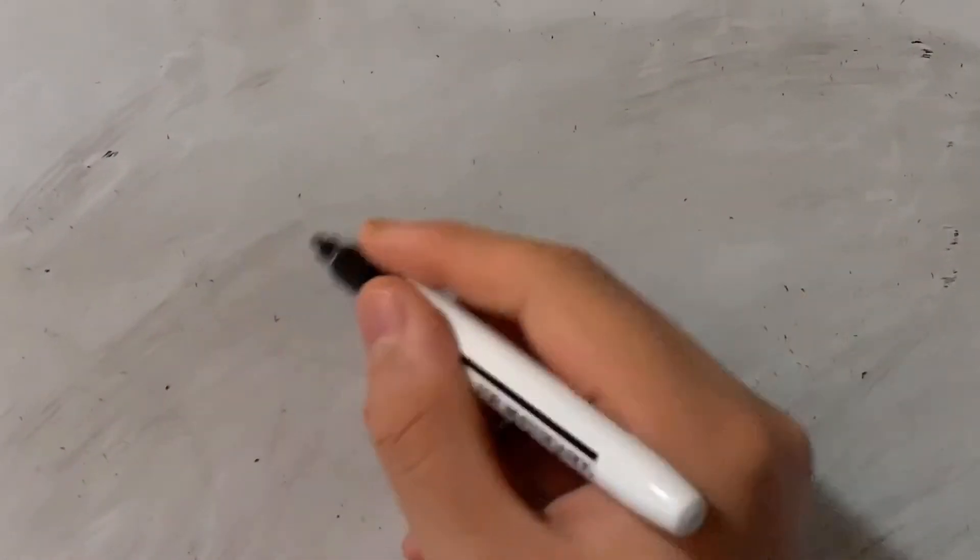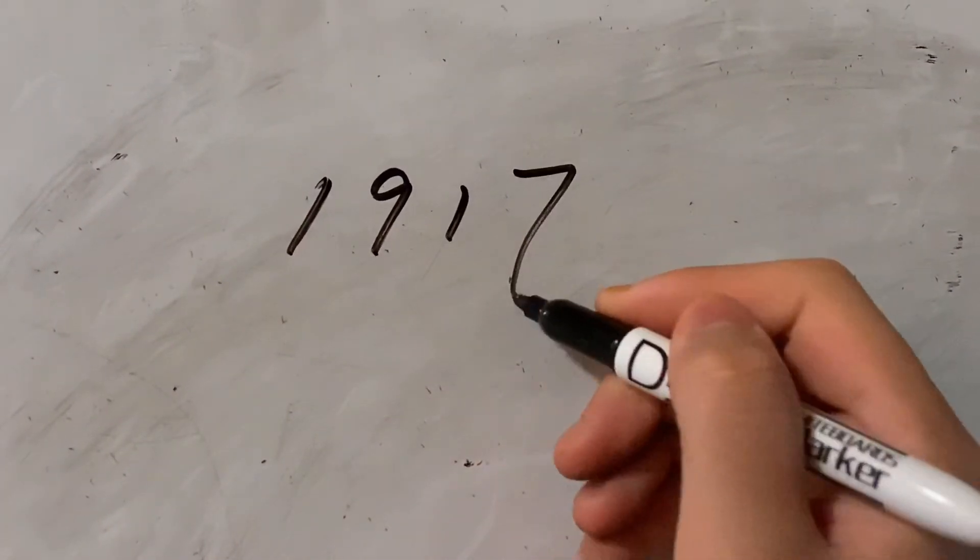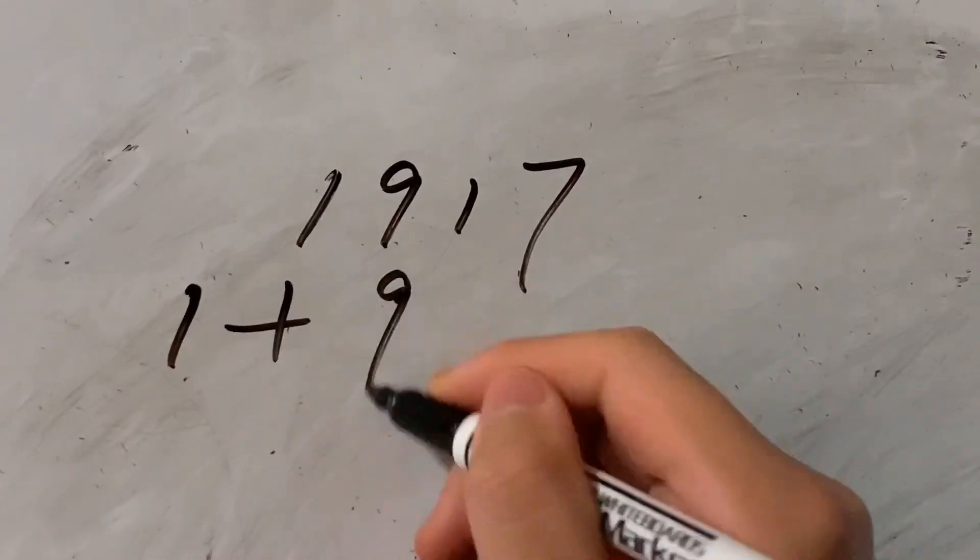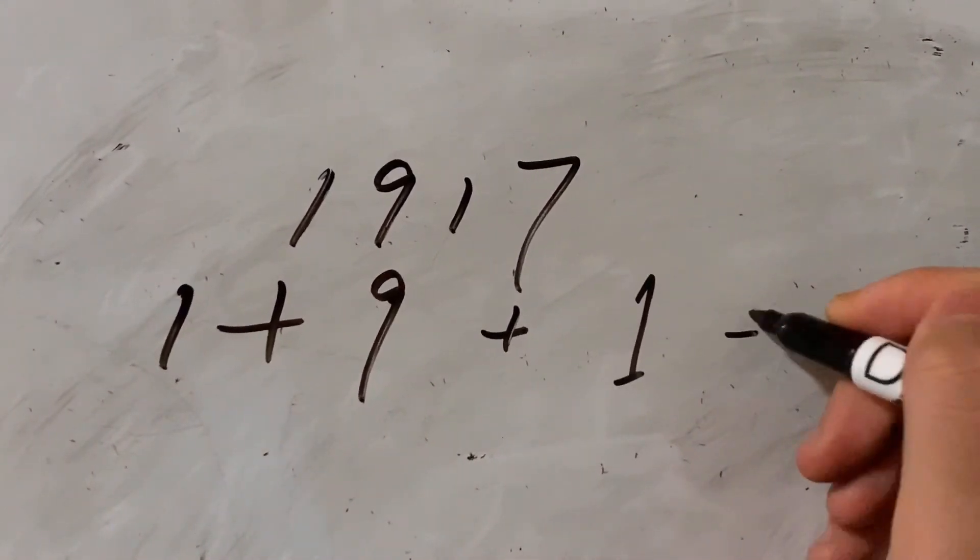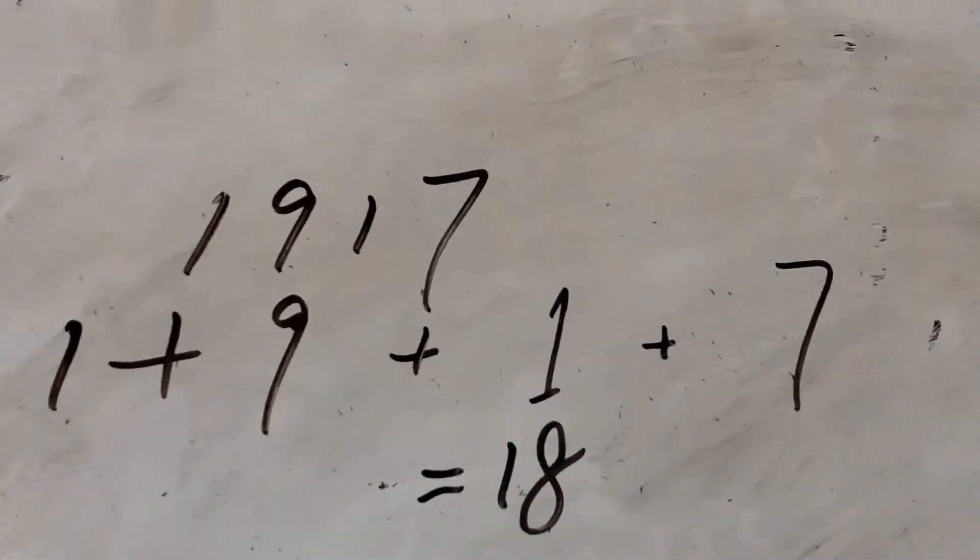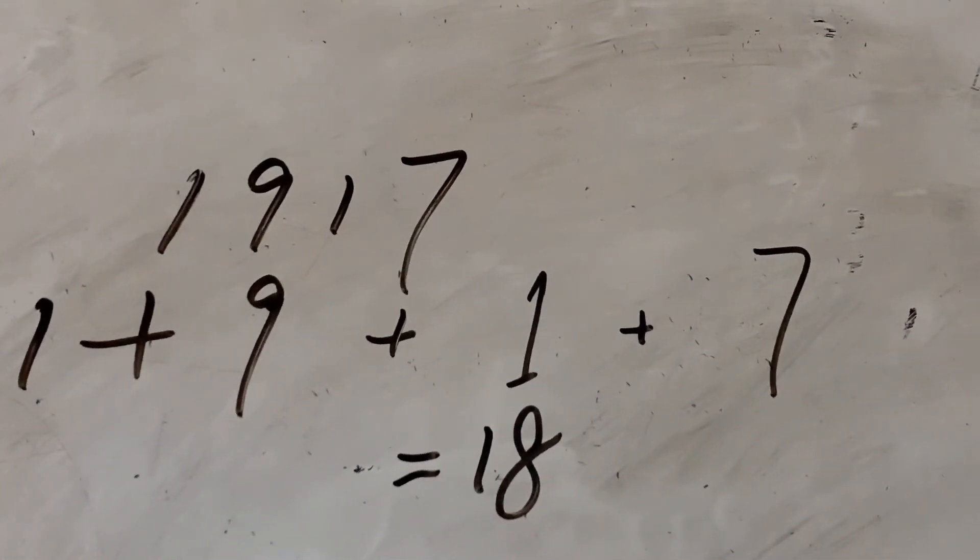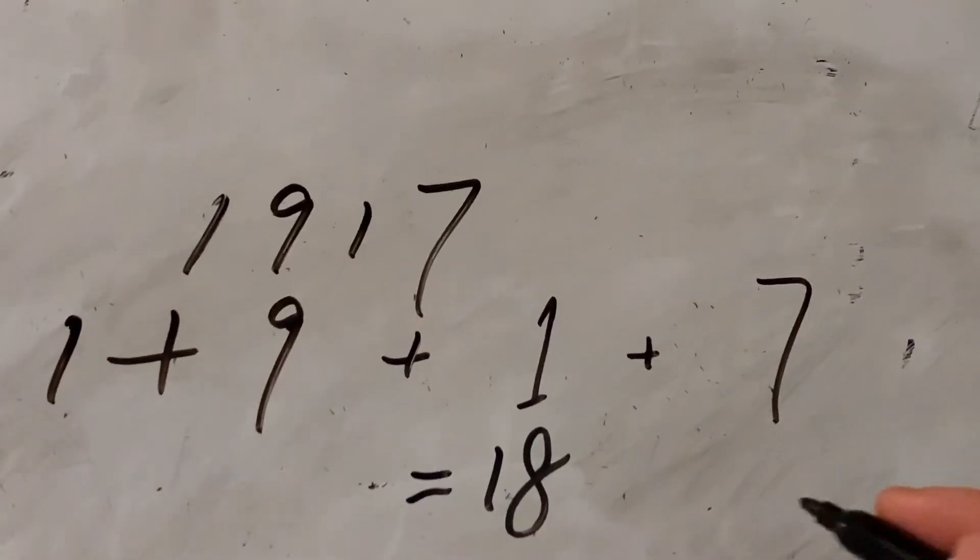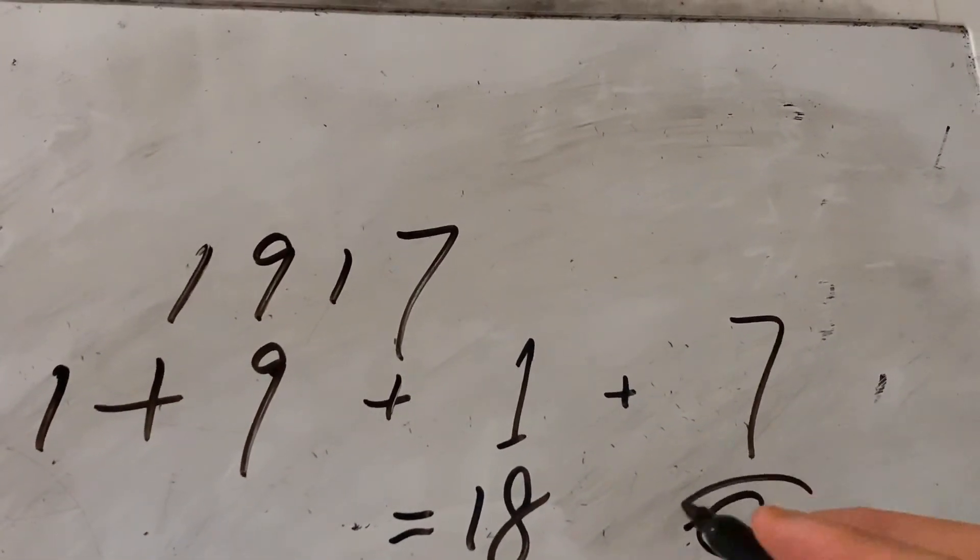So in this case, 1917 is going to be the correct answer, which is every digit of it adds up to 18. So it is going to be the correct answer, which is C, in that year's problem.